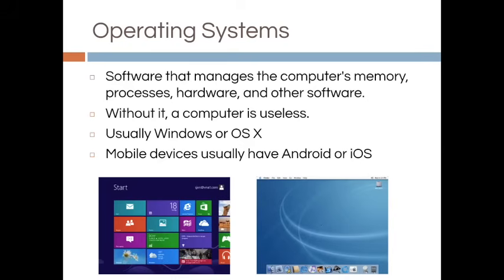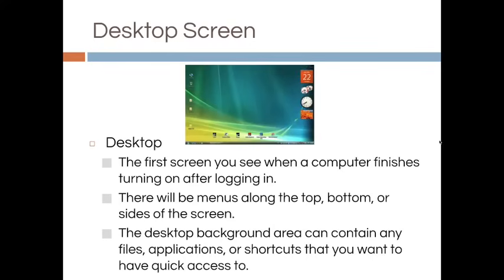Mobile devices usually have Android or iOS. The desktop screen is the first screen you see when a computer finishes turning on after logging in. There will be menus along the top, bottom, or sides of the screen. The desktop background area can contain any files, applications, or shortcuts that you want to have quick access to. You'll learn more about that in the Files, Folders, and Programs class.